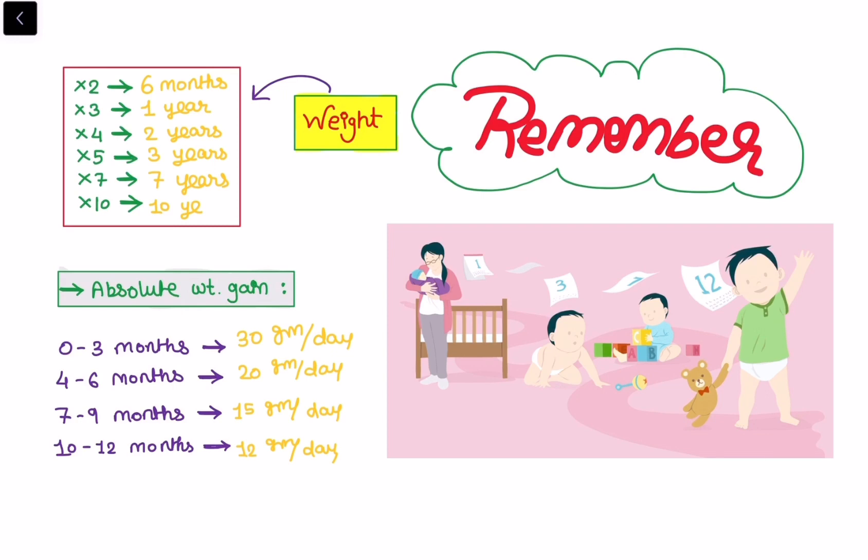Absolute weight gain means the weight gain in a day. From zero to three months, it will be 30 grams per day. From four to six months, it will be increasing by 20 grams per day. From seven to nine months, it will be increasing by 15 grams per day, and from ten to twelve months, it will be increasing by 12 grams per day.